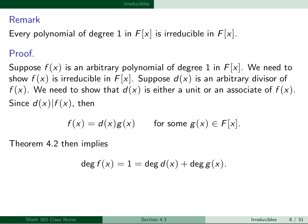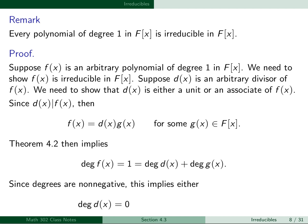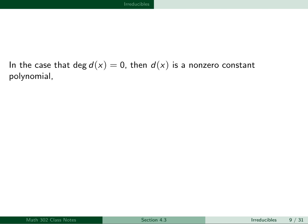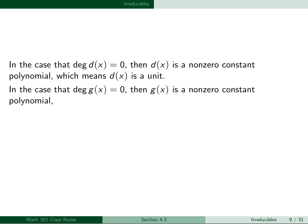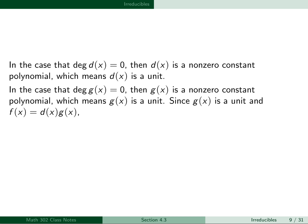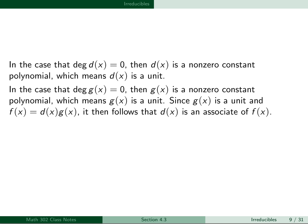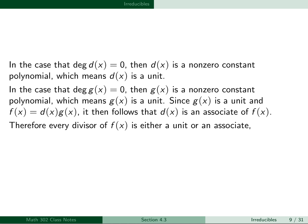Theorem 4.2 then implies that the degree of f(x), which is 1, equals the degree of d(x) plus the degree of g(x). Since degrees are non-negative, either the degree of d(x) is 0 or the degree of g(x) is 0. If the degree of d(x) is 0, then d(x) is a non-zero constant polynomial, which means d(x) is a unit. If the degree of g(x) is 0, then g(x) is a non-zero constant polynomial, meaning g(x) is a unit, and since f(x) equals d(x) times g(x), it follows that d(x) is an associate of f(x). Therefore, every divisor of f(x) is either a unit or an associate, which implies f(x) is irreducible.